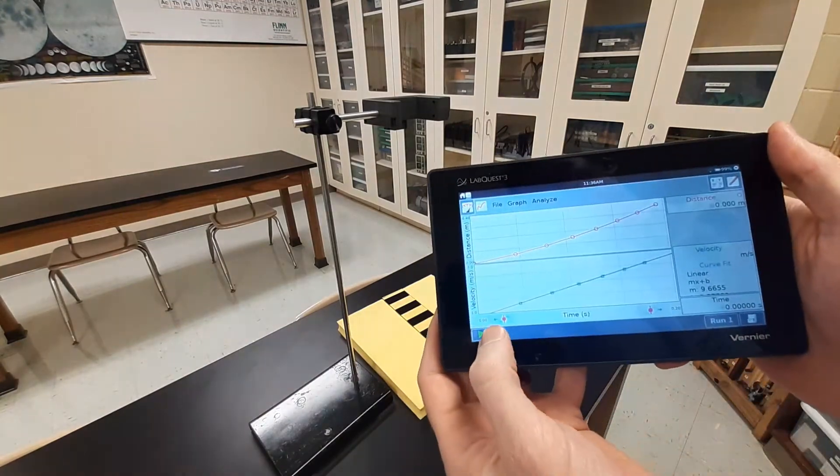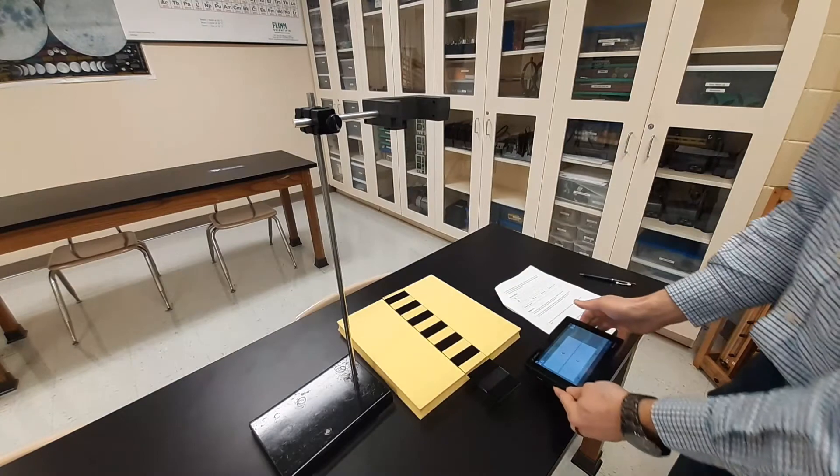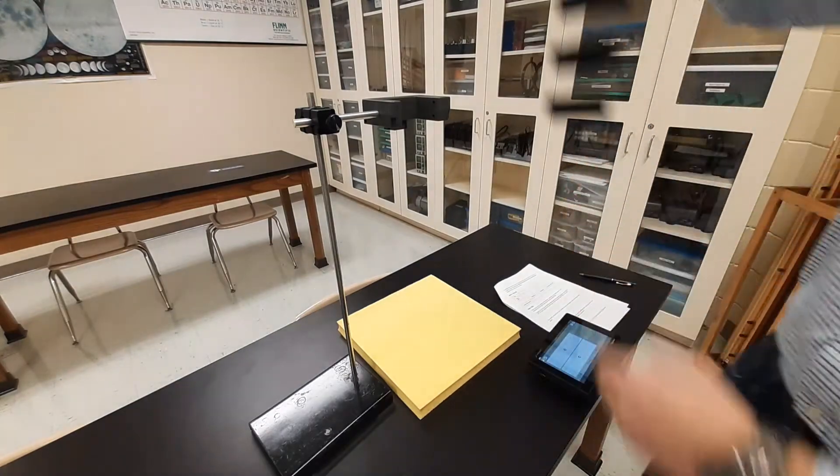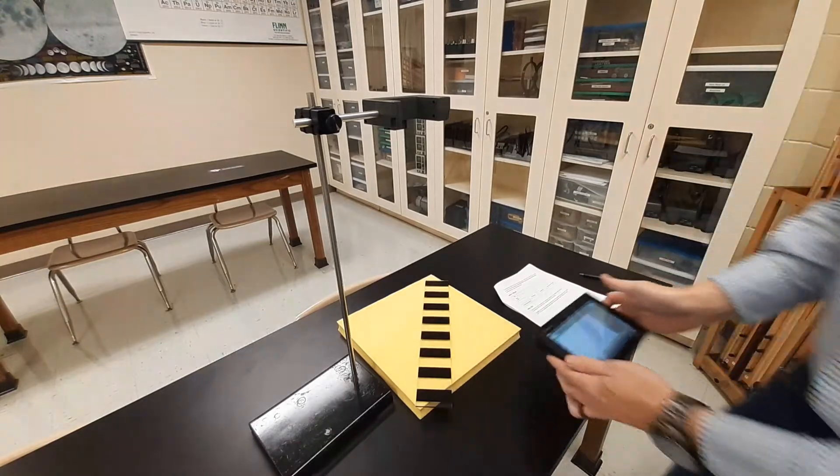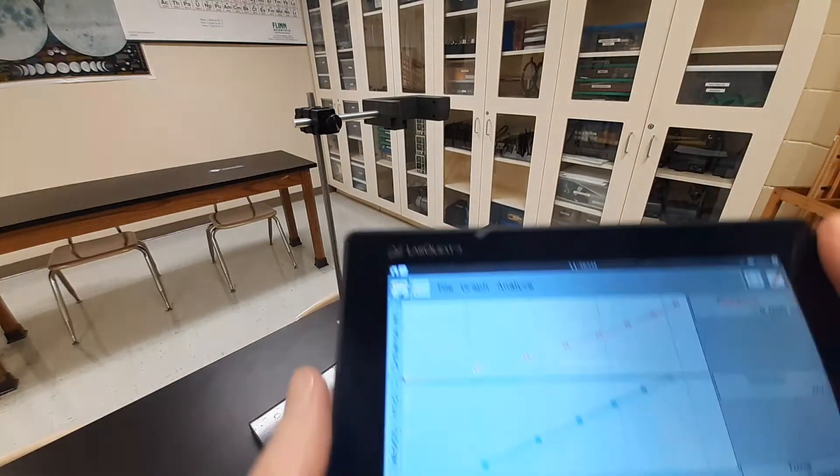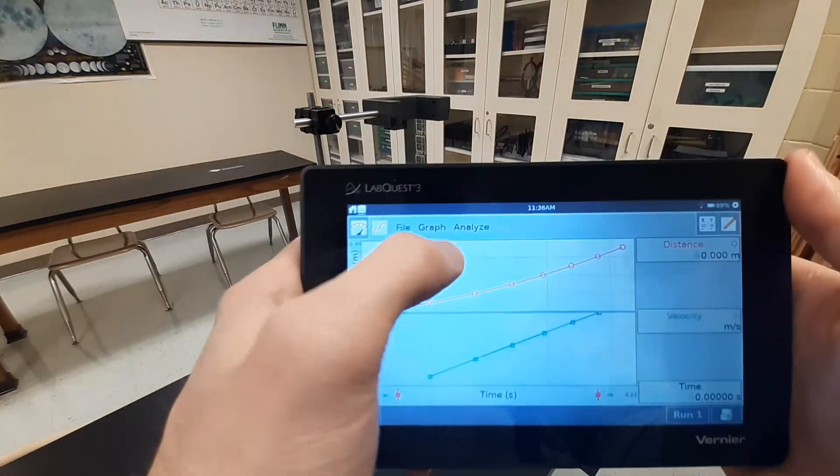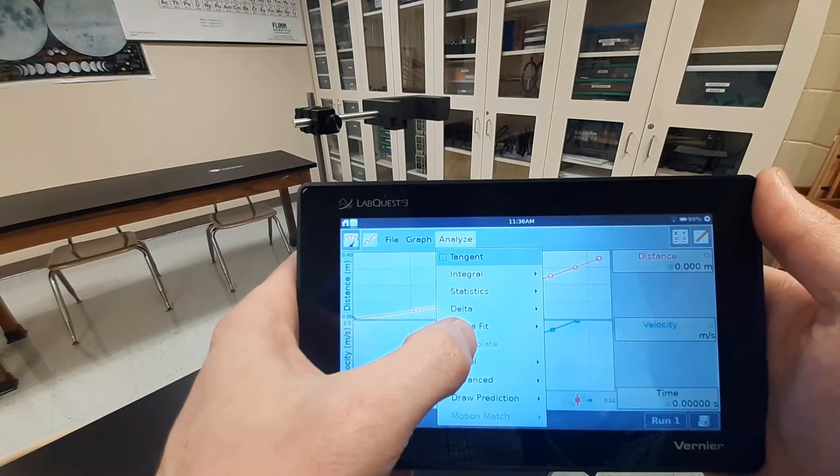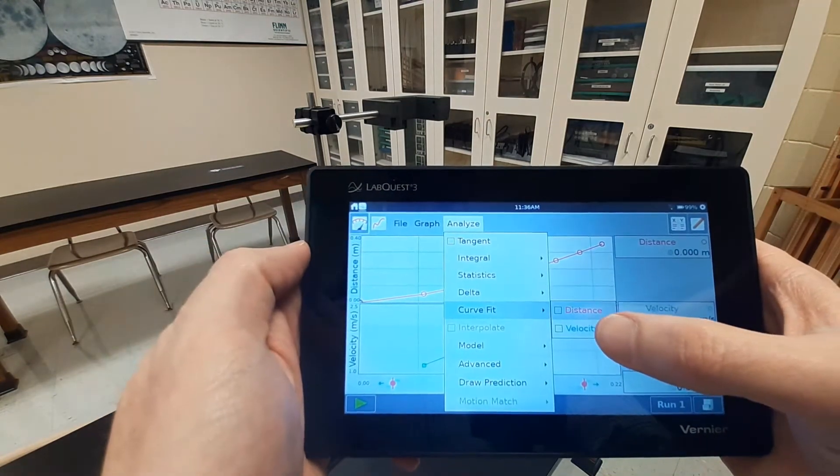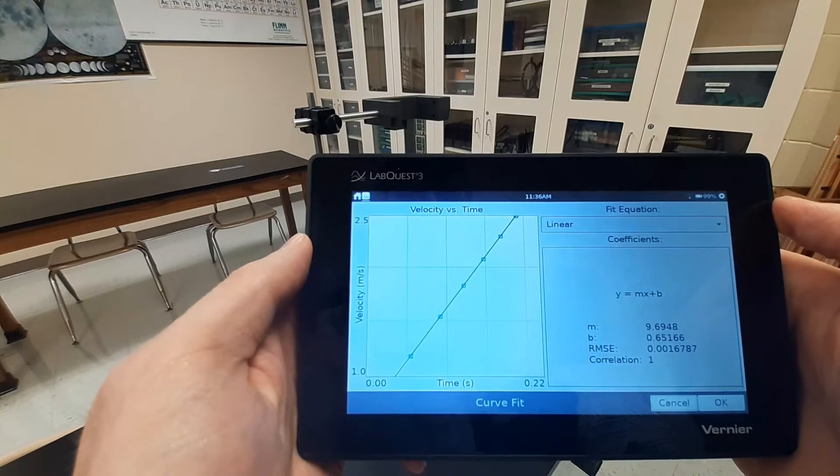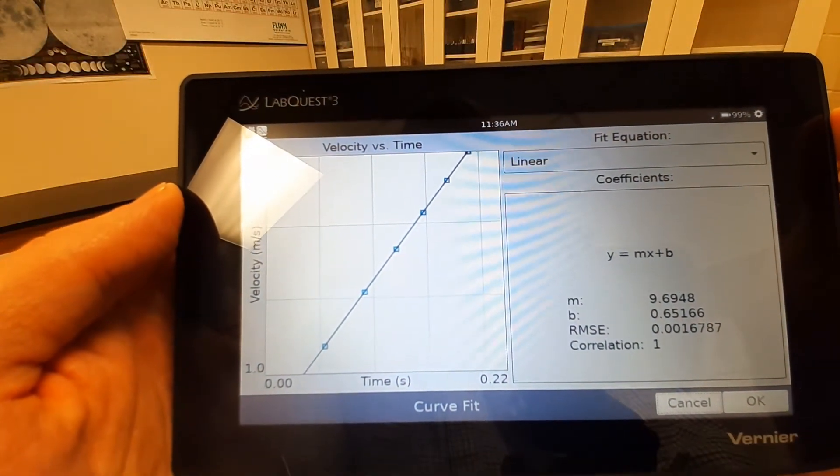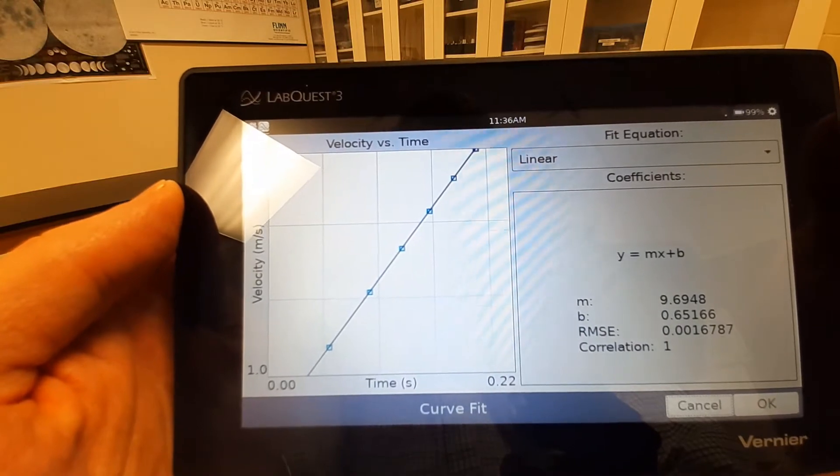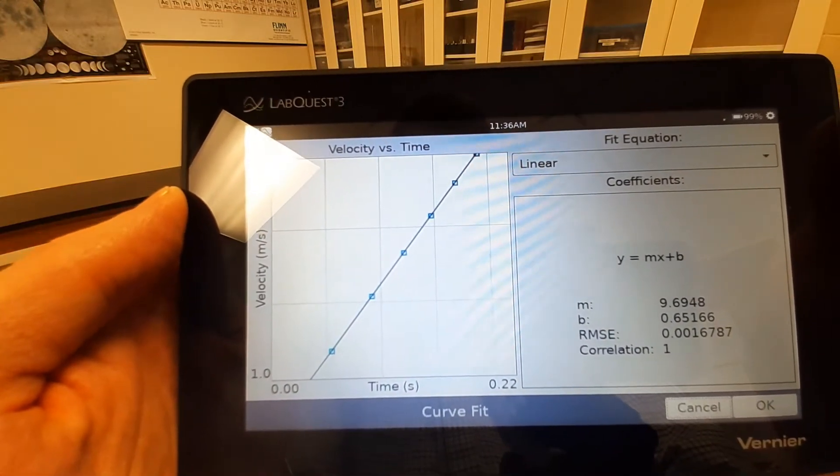Trial number two. So I'm going to collect some more data right here. I'll hold this up high, I'm going to drop it right down through the middle. I'm going to come up here, I'm going to do the same thing. I'm going to analyze, curve fit, I care about the velocity graph. This time we get a slope of 9.6948. That was trial number two.